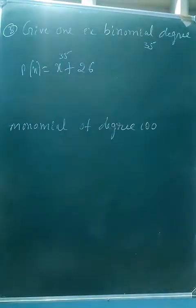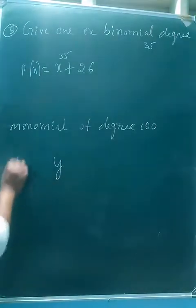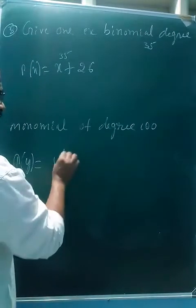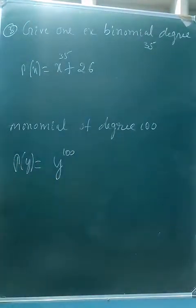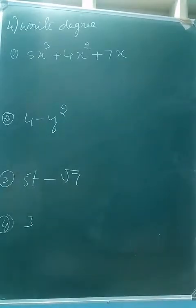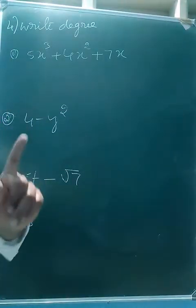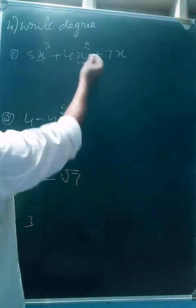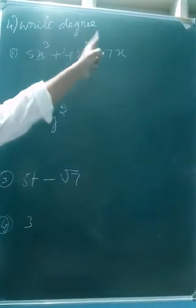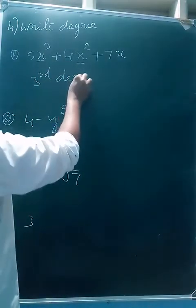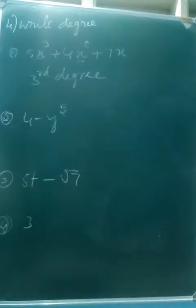Next: monomial of degree 100. Monomial y — p(y) — power is the degree. Degree 100 means the power of the variable is 100, which is the highest power of the variable. Now write the degree: the highest power of the variable. For variable x with powers 3 and 2, the highest is 3, therefore it is a third-degree polynomial.